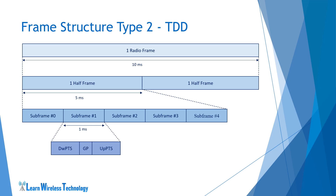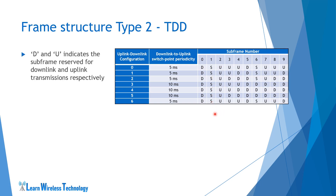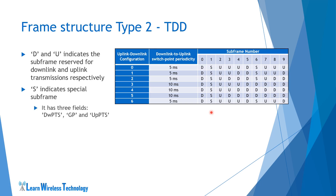The Type 2 radio frame also contains a special subframe. The special subframe fields include DWPTS (downlink pilot timeslot), guard period, and UPPTS (uplink pilot timeslot). Looking at the uplink-downlink configuration table for the TDD radio frame, there are 7 different combinations defined. In all configurations, some subframes are assigned for downlink (D), some for uplink (U), and the rest are special subframes (S). The total length of these 3 fields combined is equal to 1 millisecond.